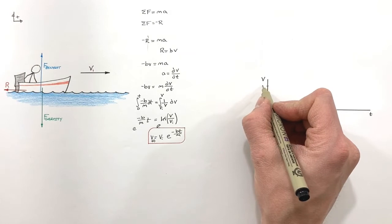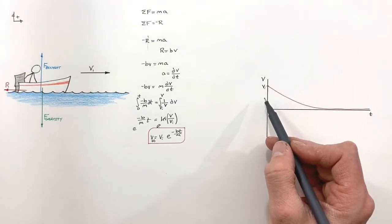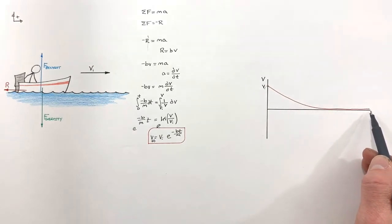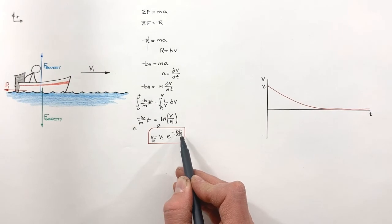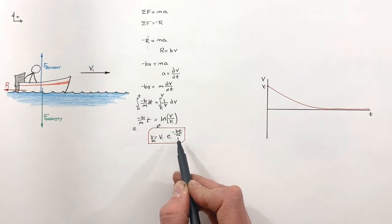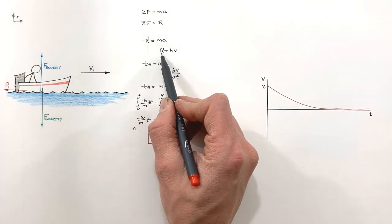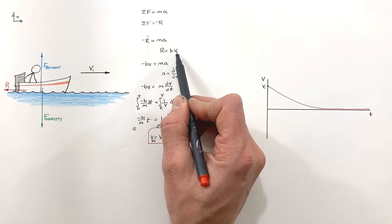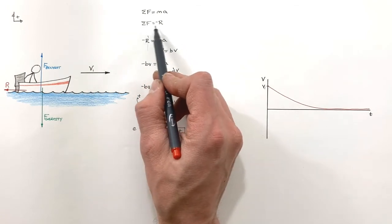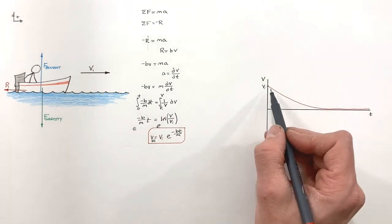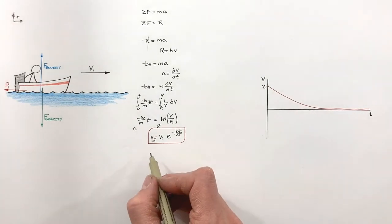Graphing velocity as a function of time: at t = 0, velocity equals vi, and as time goes on the velocity decreases. Notably, the velocity approaches a horizontal asymptote — there is no finite value of time for which e^(−bt/m) equals zero, meaning the boat never actually stops. This makes physical sense: as velocity approaches zero, the resistive force also approaches zero, so the net force approaches zero and the boat ceases to accelerate, resulting in that asymptotic behavior.